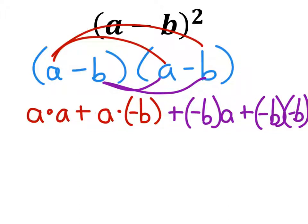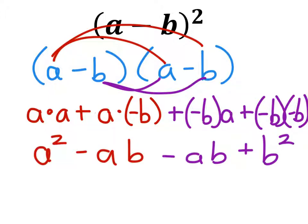Next I'll distribute that negative b into that other set of parentheses, which gives us these values here. Notice on this side we've got two negatives, which eventually is going to give us a positive. Then I've combined the two a's to give us an exponent of 2, and these two b's give us an exponent of 2 as well. I've switched b and a and changed the sign to a minus, because we're adding a negative here and a negative here as well.